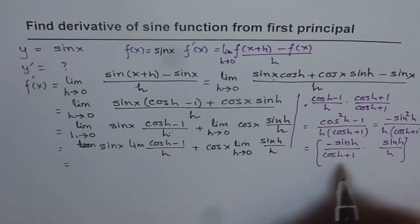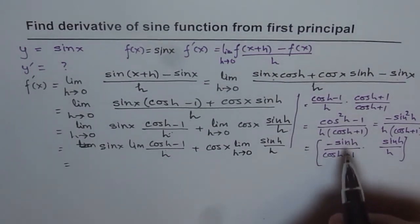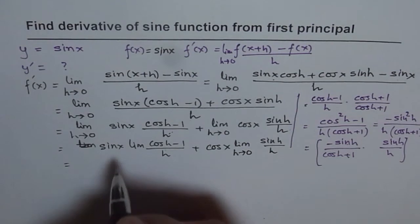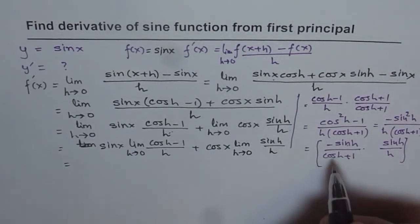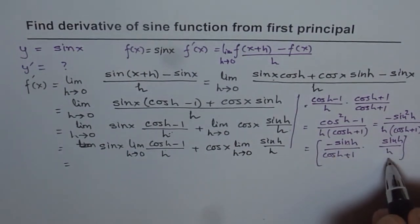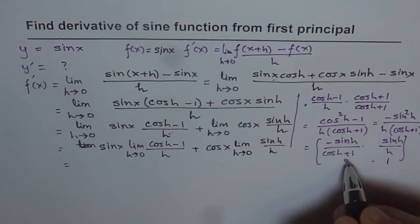Now this limit is 0 as we found here. If I substitute h as 0 here, well, this is h approaching 0. This term is 1, and this term is 0 over 1 plus 1, which gives me 0. So the first term is 0.